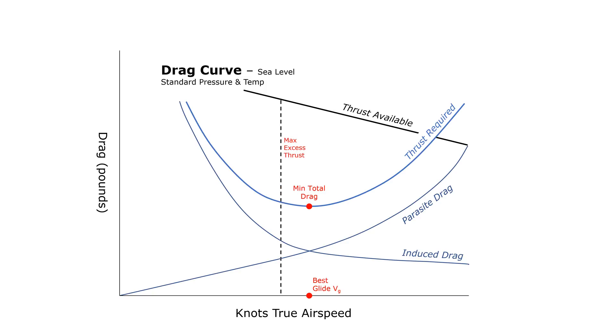It's at this speed, not at VG, where we'll find what's called our best angle of climb speed, or VX.